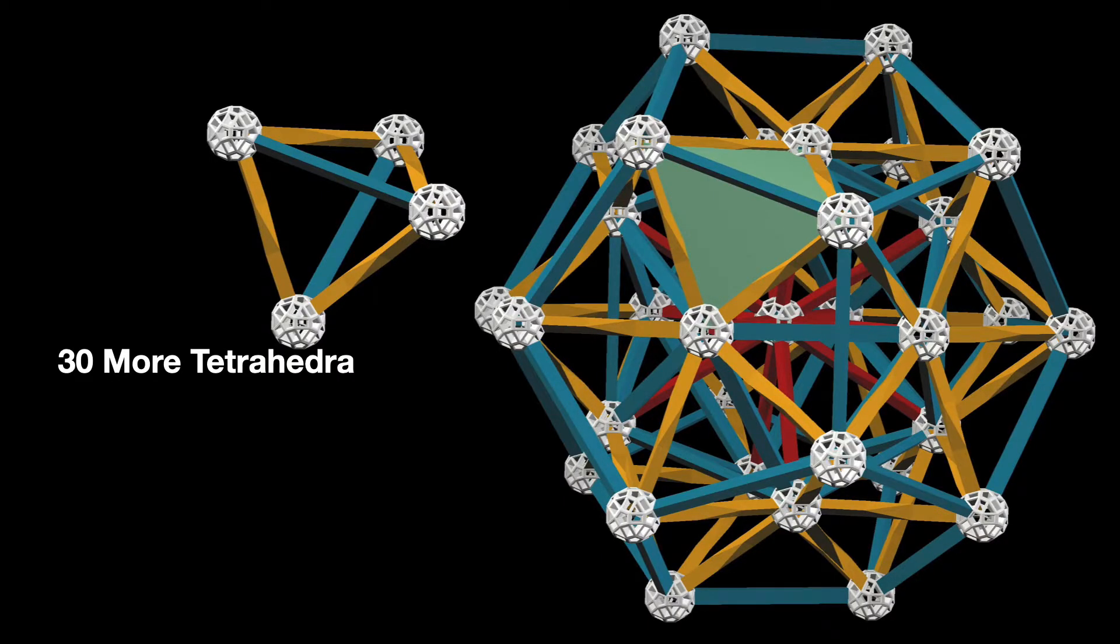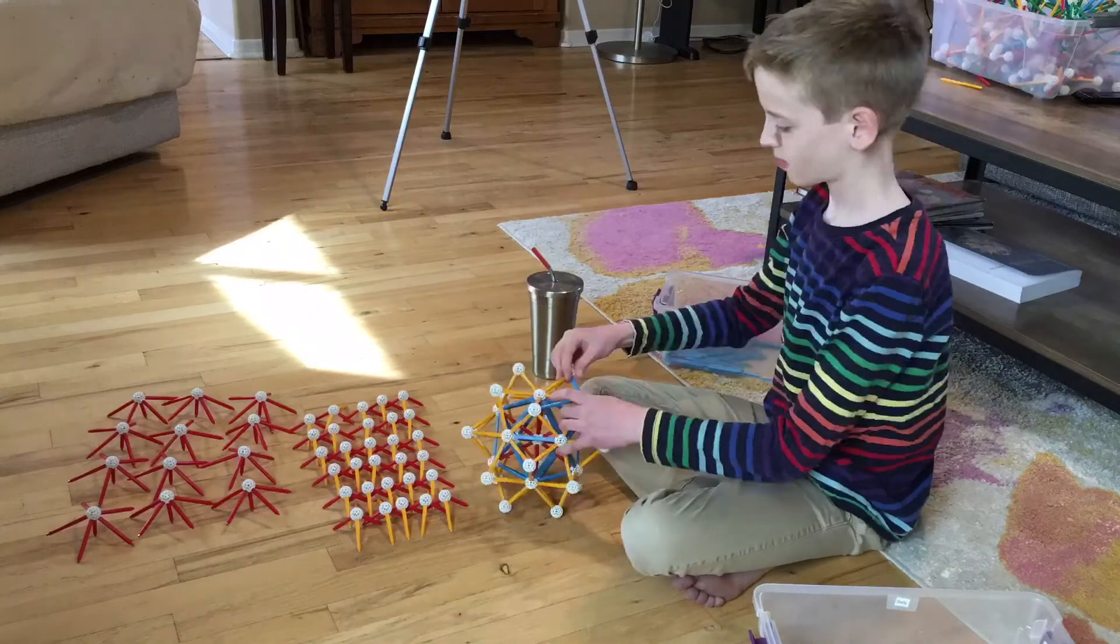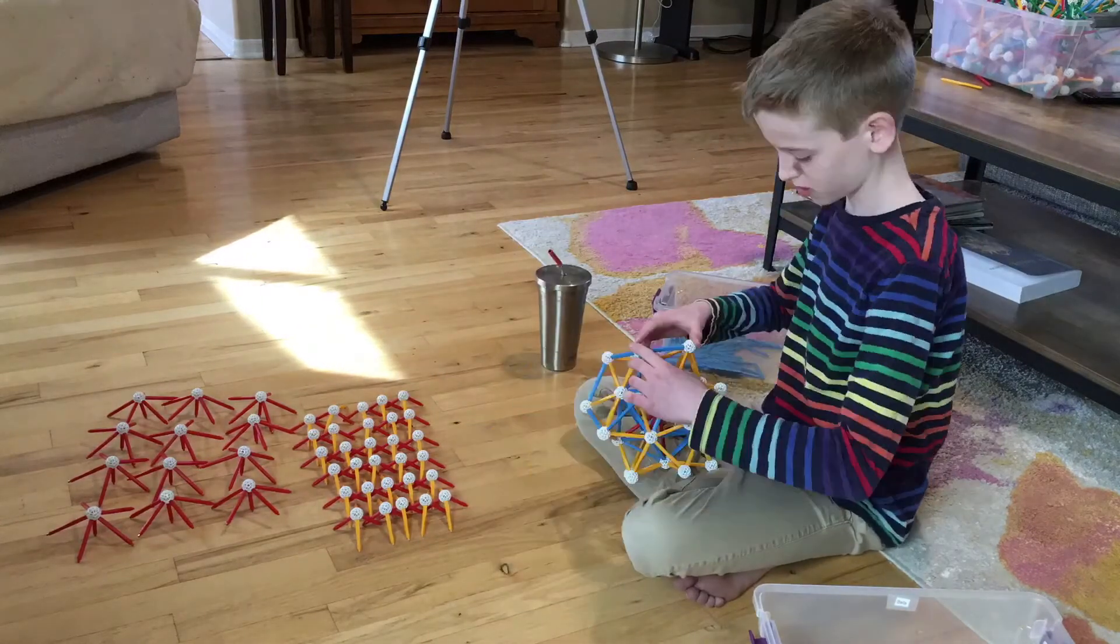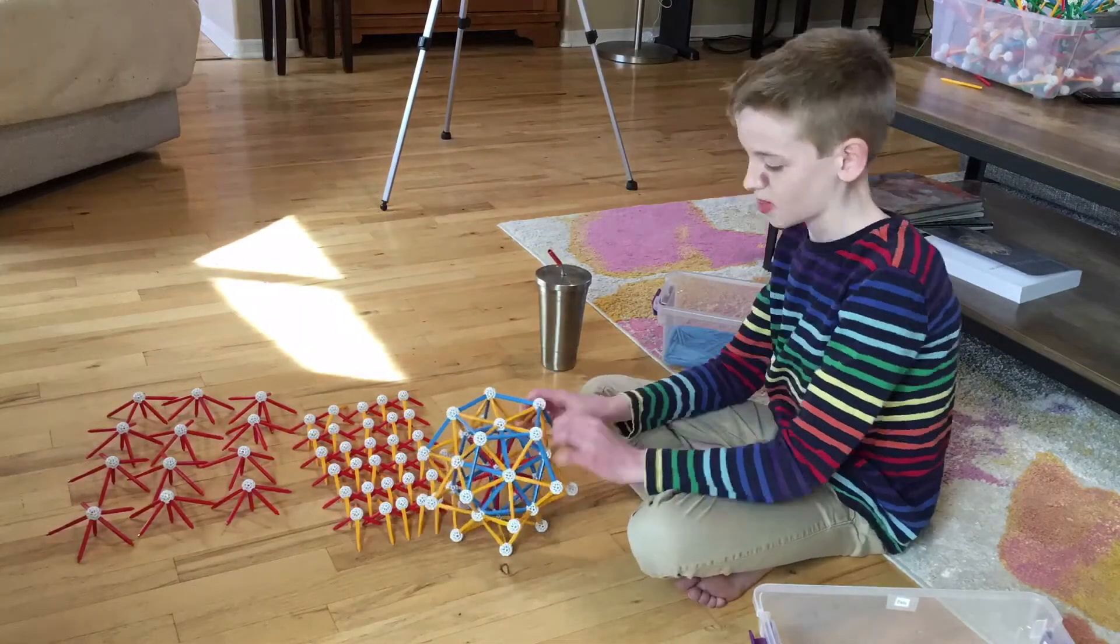Then in between those are 30 more. For these ones, I'm just adding a single strut for each. Right now the envelope will be a dodecahedron.